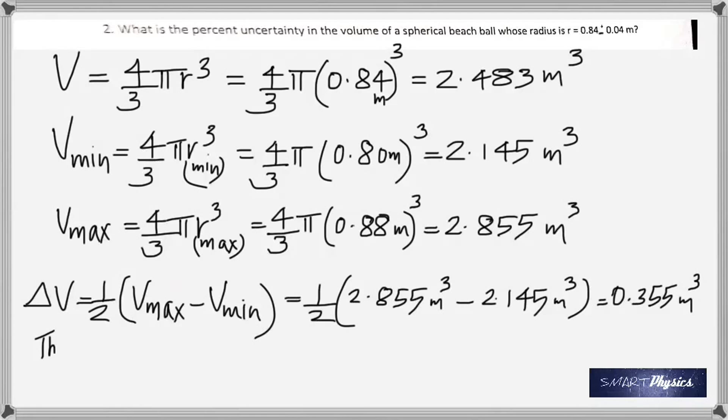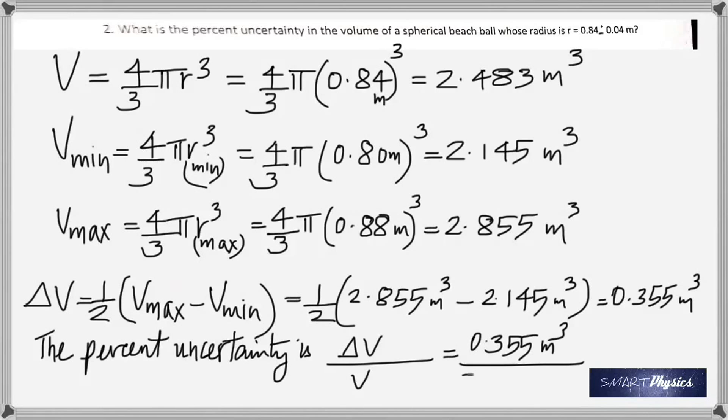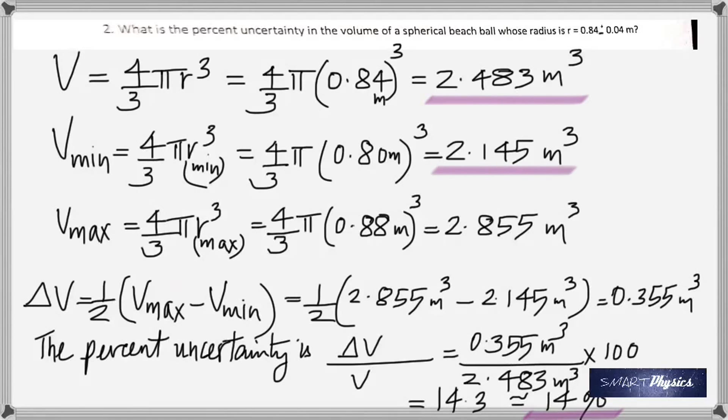And now to find the percent uncertainty, take this value, divide by the volume for radius of 0.84, which is 2.483, times 100, because it's expressed as a percentage. Which gives about 14%.